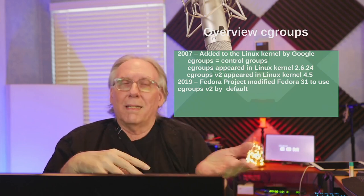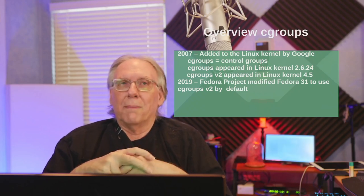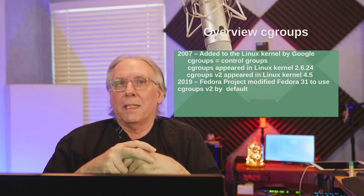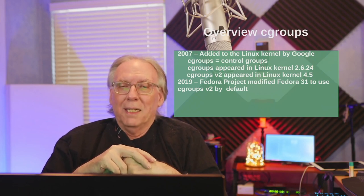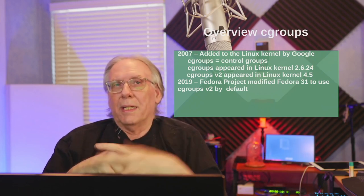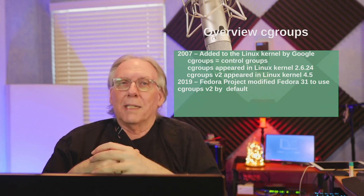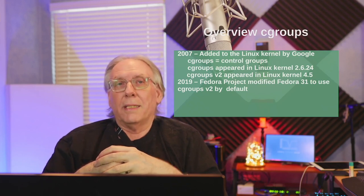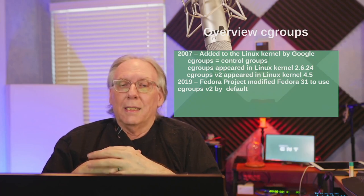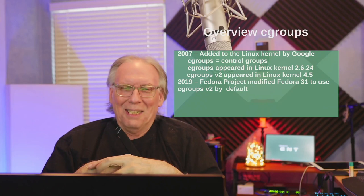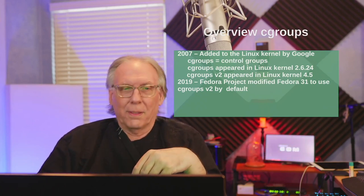What really matters is there wasn't anything, and now there is. The second version appeared and it's a complete rewrite — you can't think of version 2 as being directly compatible with version 1. Version 2 appeared in kernel version 4.5, and the reason I'm laughing is because in 2019 the Fedora project replaced their default cgroup with cgroup version 2, and all of a sudden Docker didn't work. There were a few surprises in Fedora 31, and that was one of them.